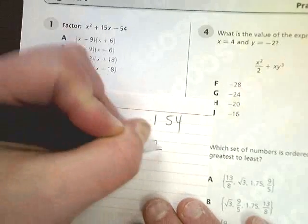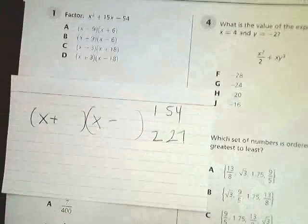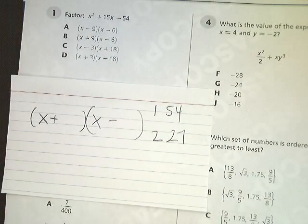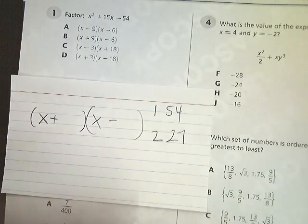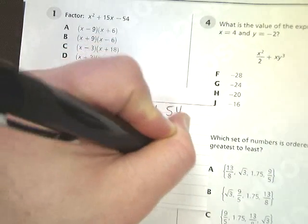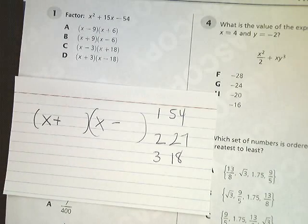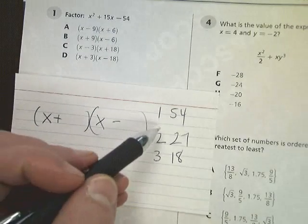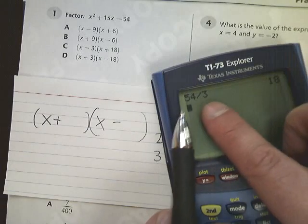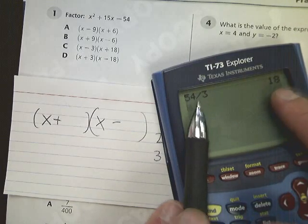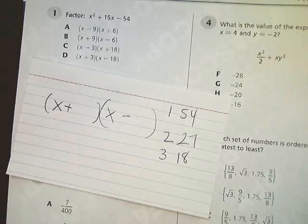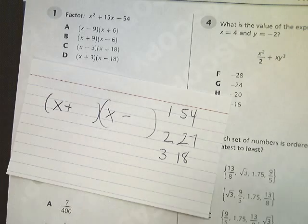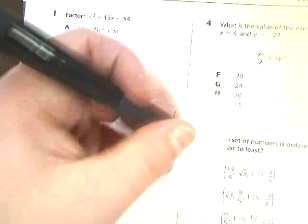So I've got 1 and 54. I've got 2 and 27. I've got 3 and 18. And if you forgot how to do a factor list, you just need to divide 54 by 1 and see if you get an integer answer. This is me dividing it by 3, and I've got 3 and 18. So I'm going to write both of those things down. And then 6 and 9.